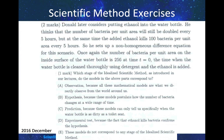In December 2016, Jono later considers putting ethanol in a water bottle. He thinks that the number of bacteria per unit area will still be doubled every five hours, but at the same time, the ethanol kills 100 bacteria per unit area every five hours. So he sets up a non-homogeneous difference equation for this scenario. The number of bacteria per unit area on the inside surface of the water bottle is 256 at time zero — the time when the water bottle is cleaned thoroughly using detergent and the ethanol is added. The key point is that he sets up a non-homogeneous difference equation, and that's why it is a hypothesis, because these models postulate how the number of bacteria has changed across a range of time.